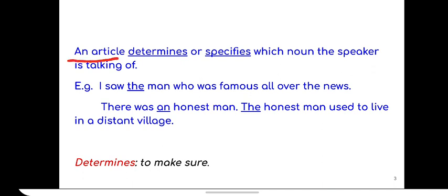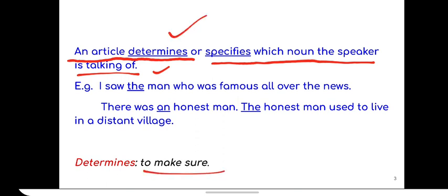So an article is something that determines or specifies which noun the speaker is talking of. So when you are saying something, normally when we utter words from our mouth, there will be a noun in the sentence. And before noun, we normally use articles there to determine, to make sure which noun we are talking about.